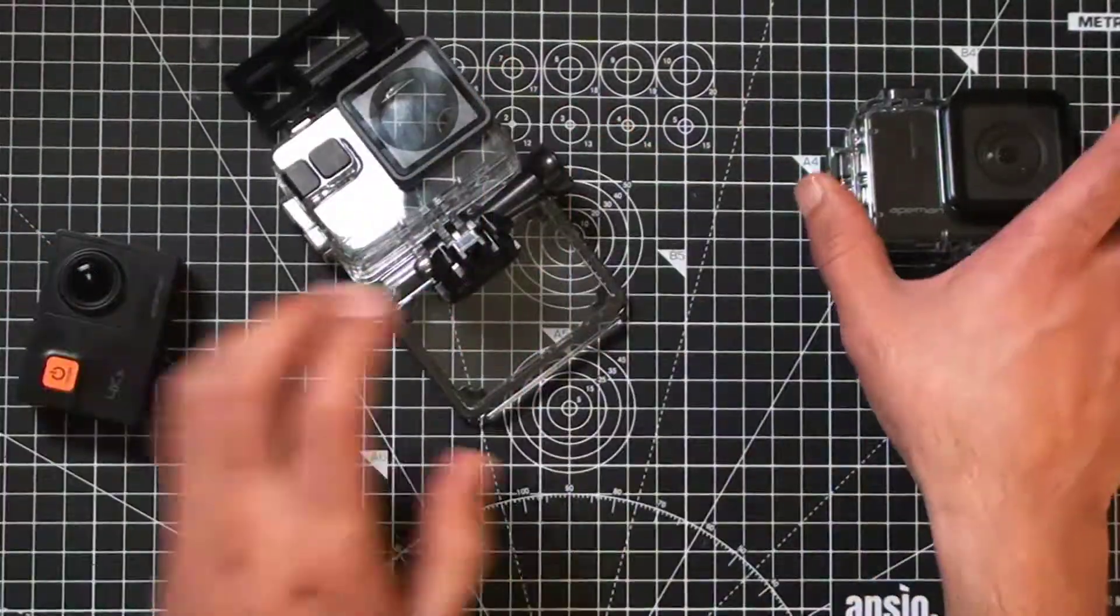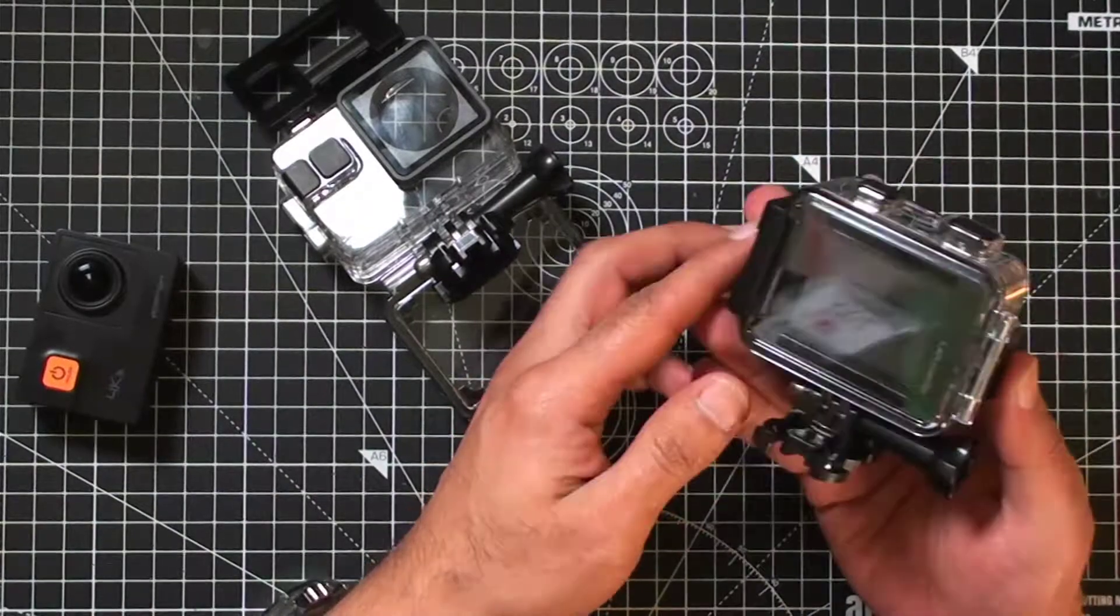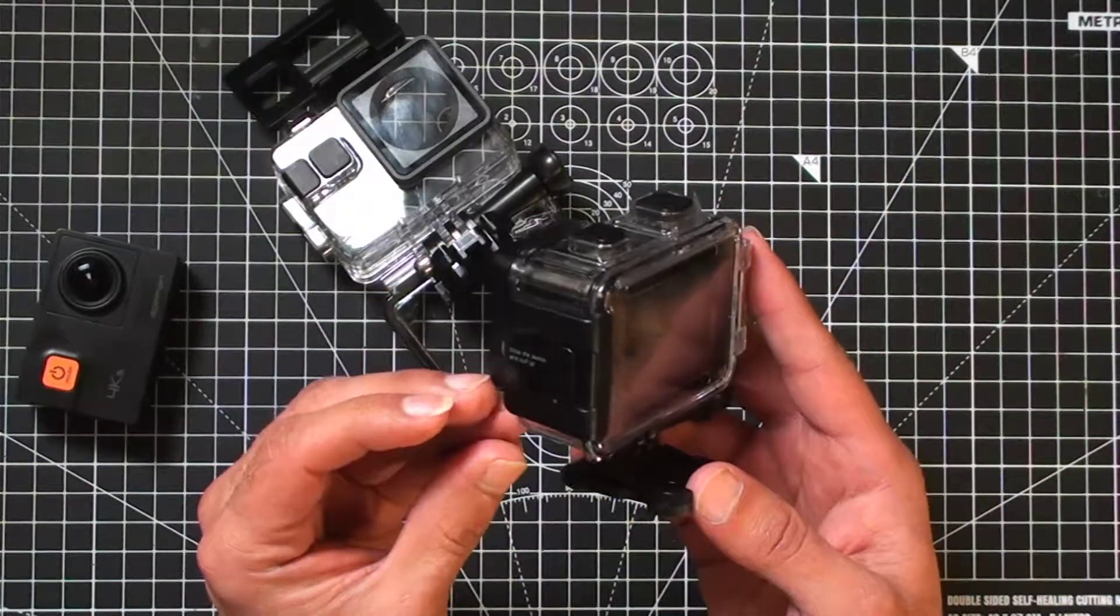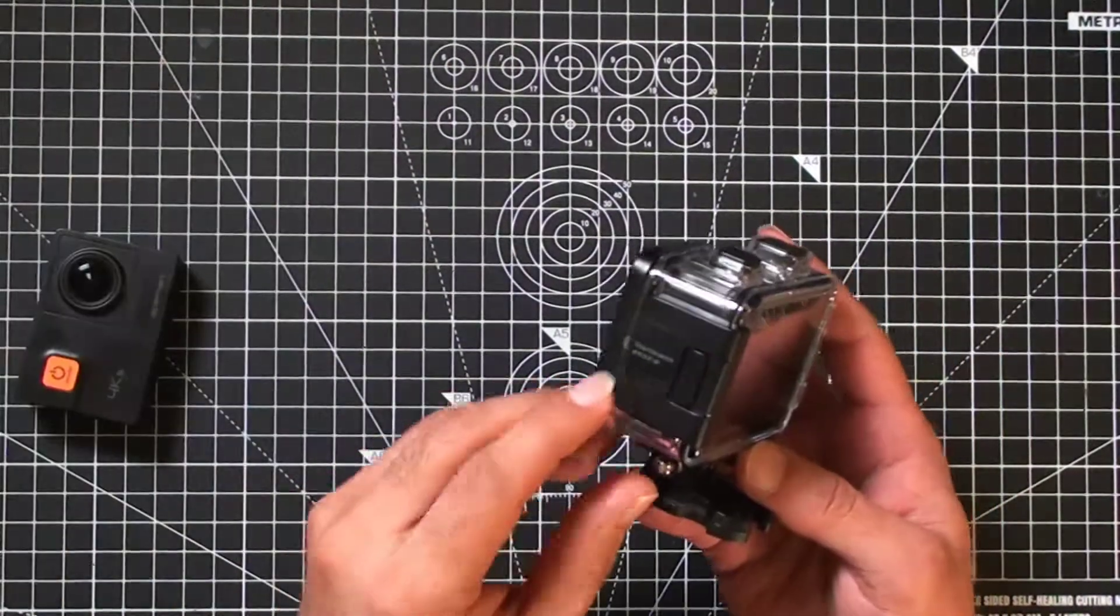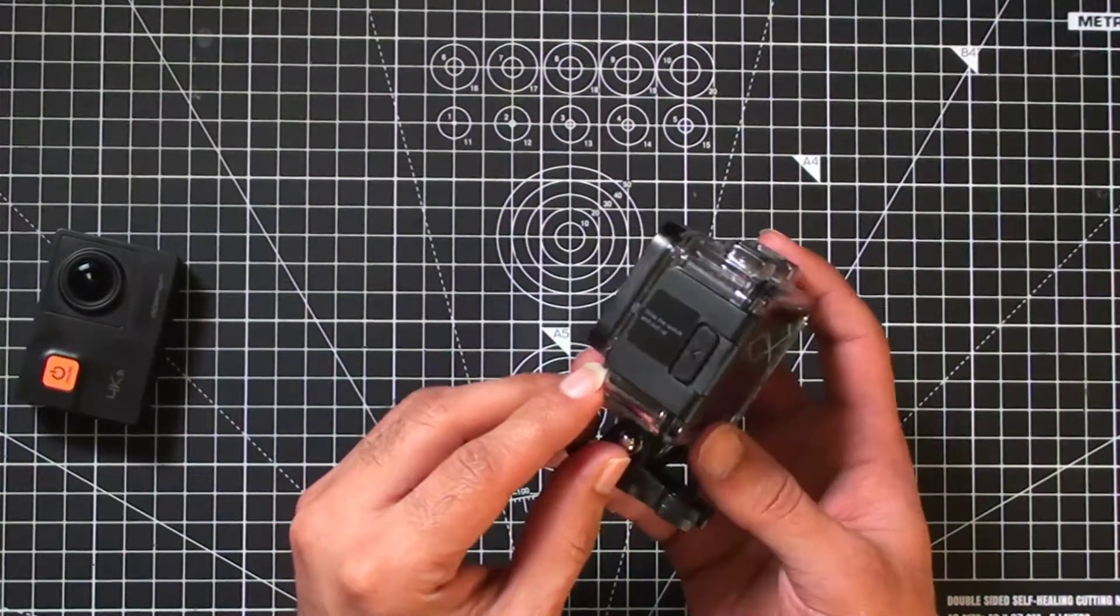And the final one—this one is actually a premium brand one, and the door flap is not on top. Let me get this out of the way, it's actually on the side.